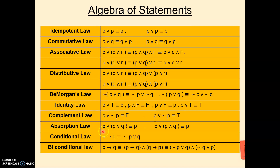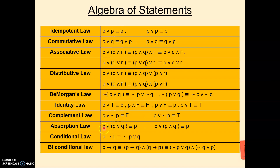Next is the Absorption law. Here two statements are given. P∧(P∨Q) is equivalent to P. The symbols are similar to the Distributive law, but the difference is only two statements are used and P is repeating — P appears outside and also inside the bracket. So P absorbs, giving P as the answer. Similarly, P∨(P∧Q) is equivalent to P.